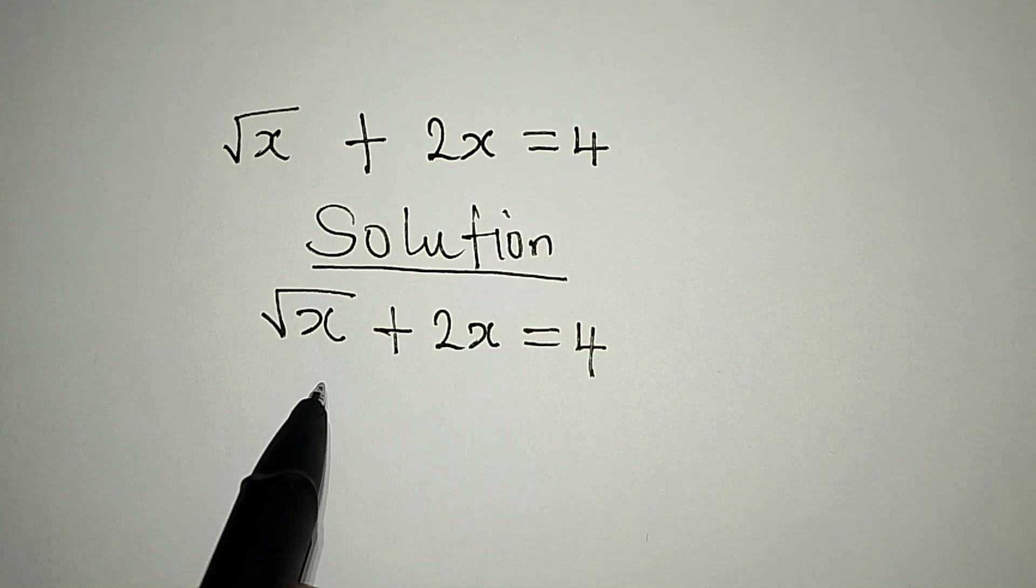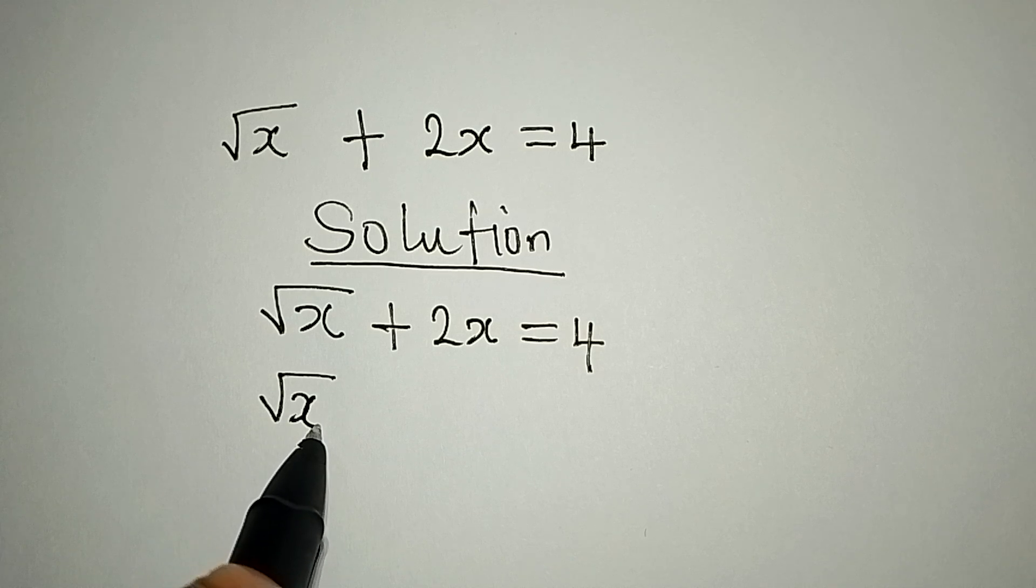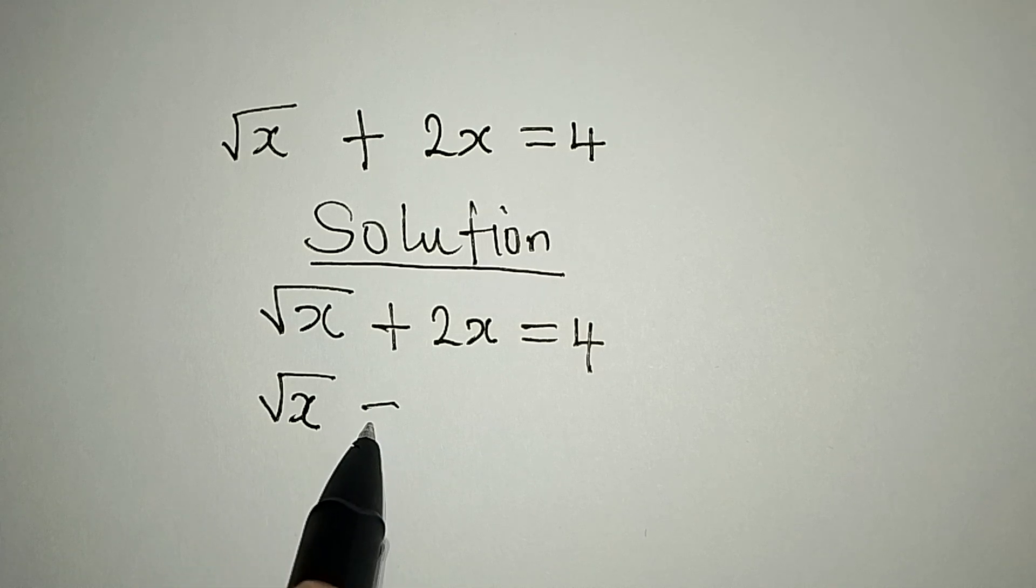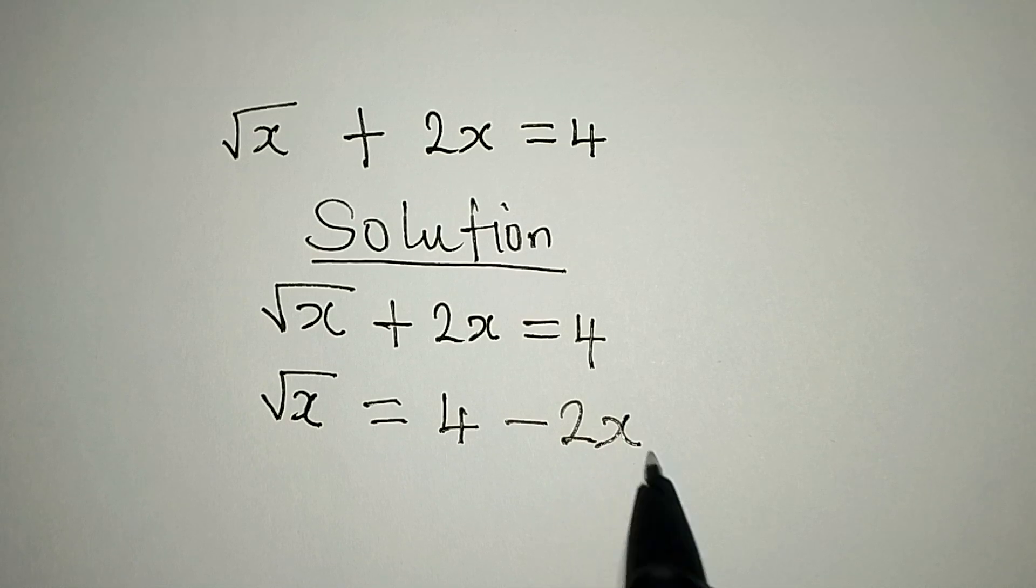Now let's make square root of x the subject. That means square root of x will be on the left, and then we have 4 minus 2x on the right.